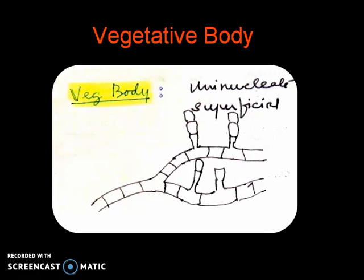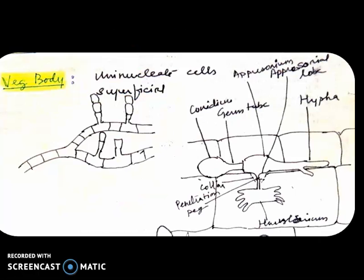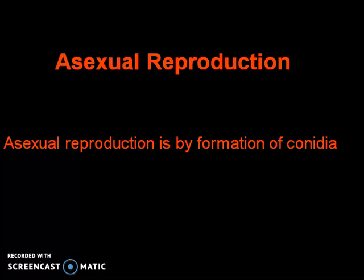The vertical branches are actually conidiophores, which are meant for producing conidia or cutting off conidia. Asexual reproduction is by formation of conidia.